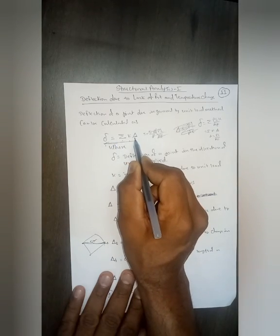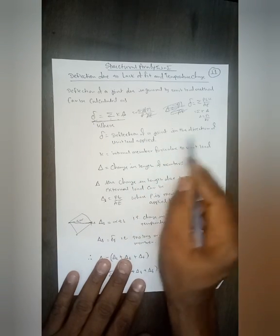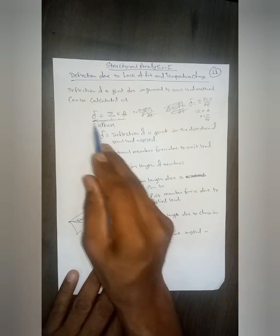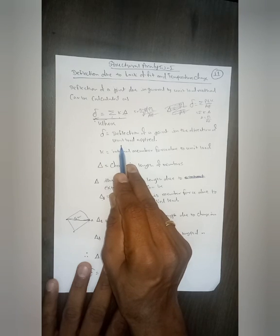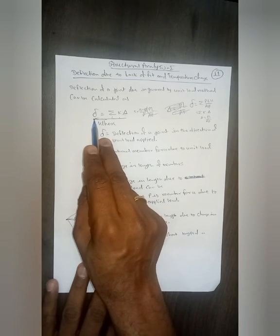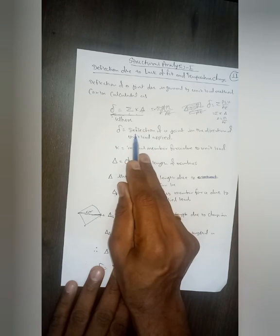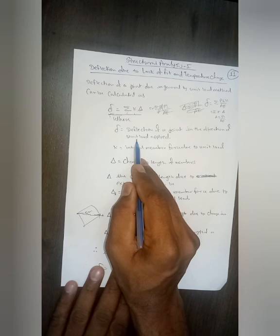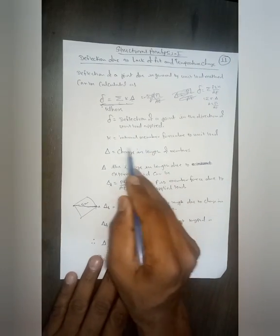In general, we can find out the deflection of a joint using the same equation; only this Delta will have a different meaning. Delta is the deflection of a joint in the direction of the unit load applied — in other words, it is the desired deflection we want to calculate, and in that direction we apply the unit load. If you get a positive answer it represents deflection in the direction of the unit load; if you get a negative value, the deflection is opposite in direction but same in magnitude.